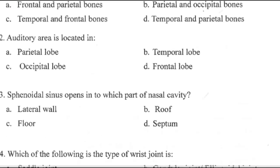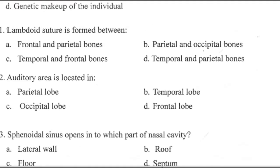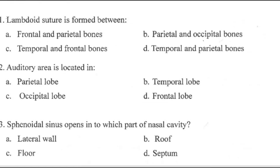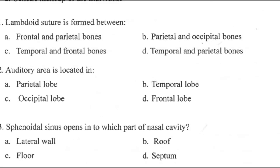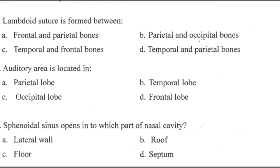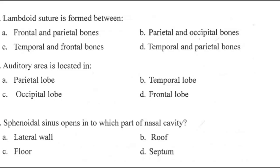Question 102: The auditory area is located in which lobe? Right answer is B, temporal lobe. Question 101: The lambdoid suture is formed between which bones? Options were frontal and parietal, parietal and occipital, temporal and frontal, temporal and parietal. Right answer is B — parietal and occipital.